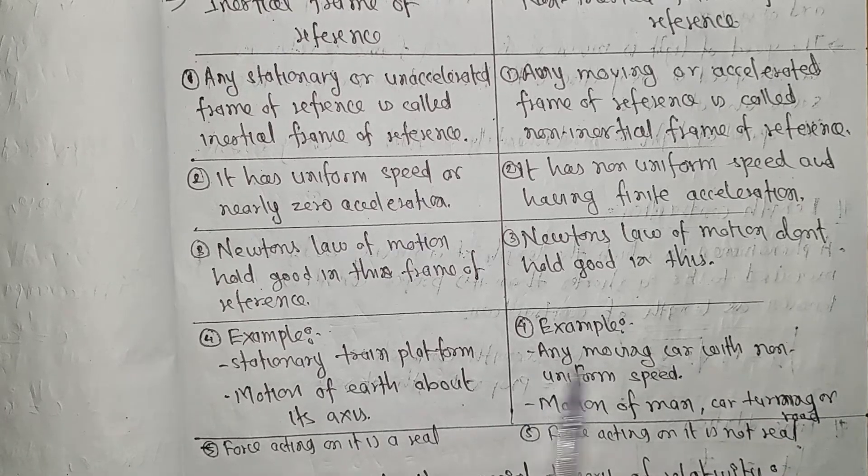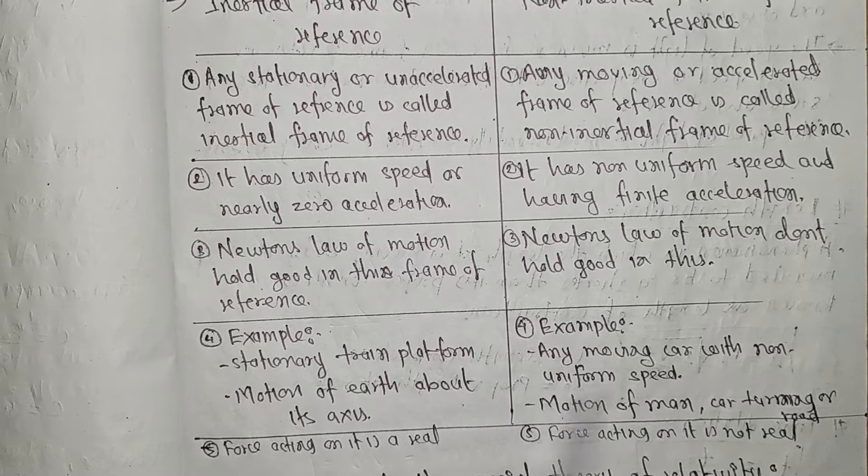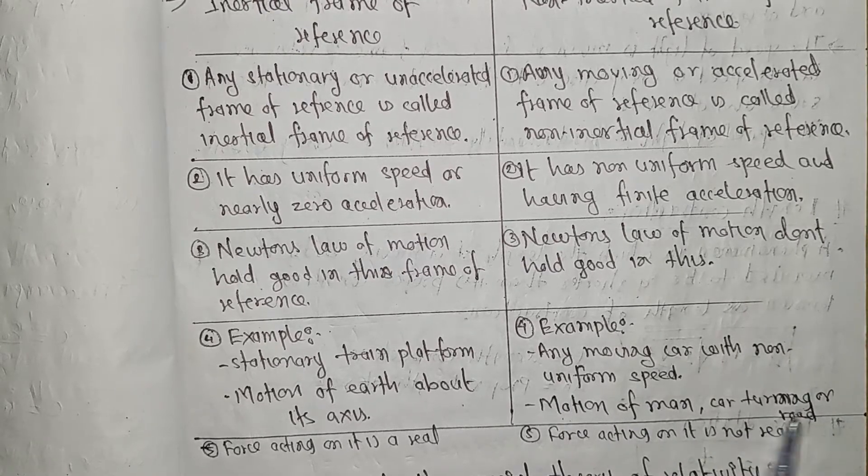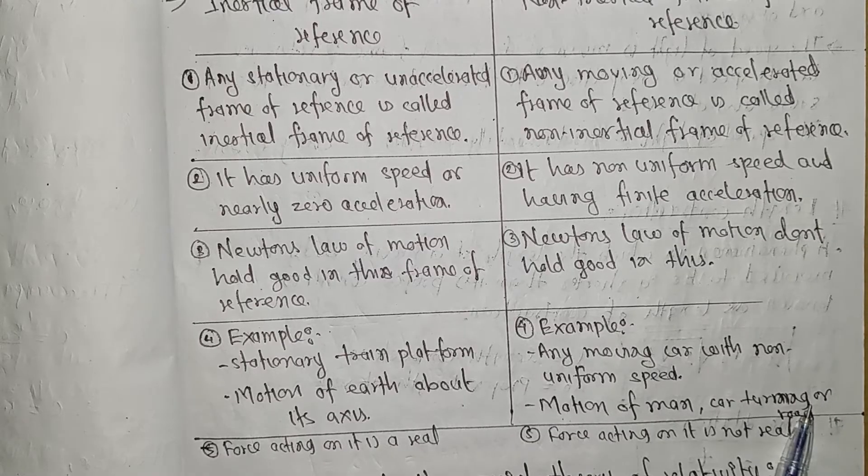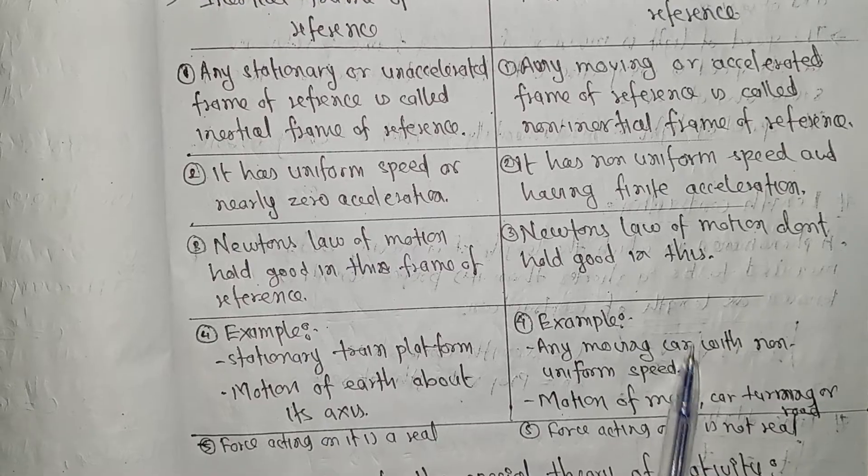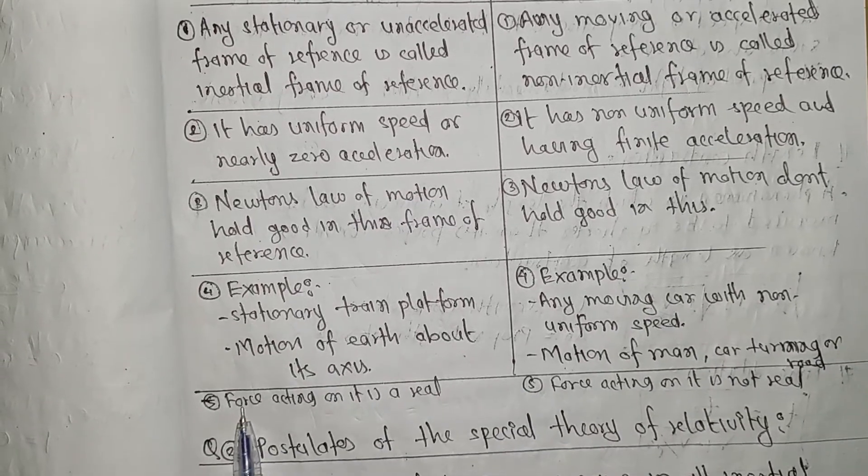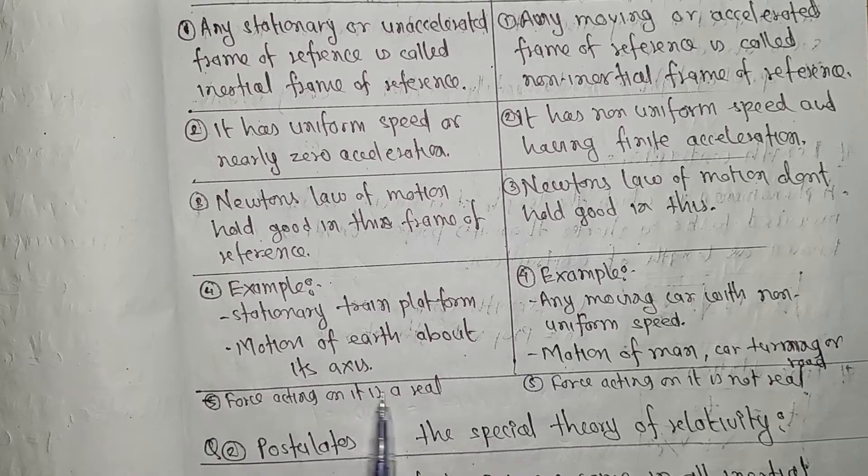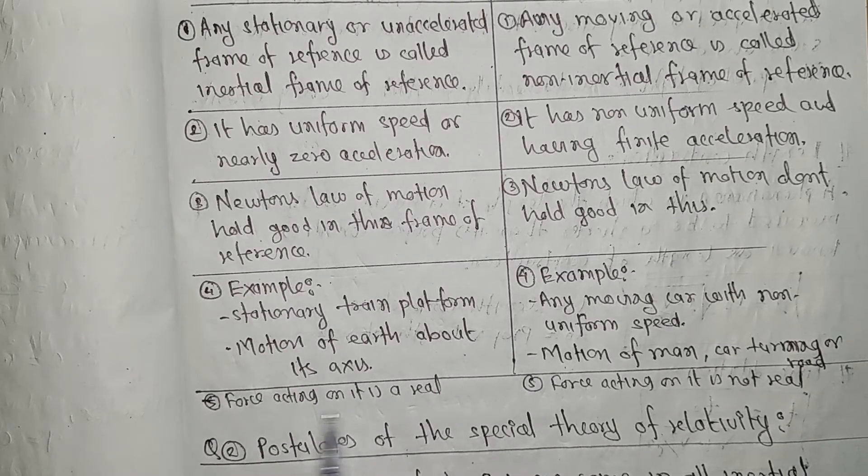Examples of non-inertial frame of reference include any moving car with non-uniform speed and motion of a car turning on a road.